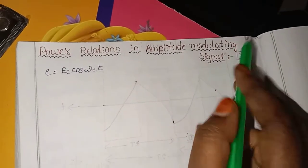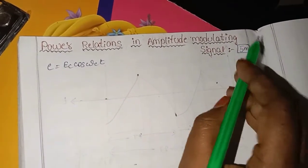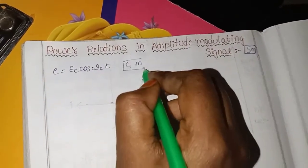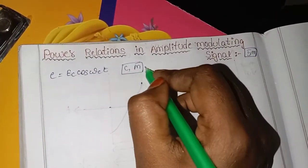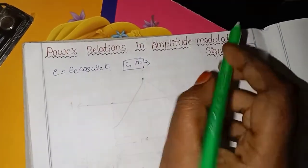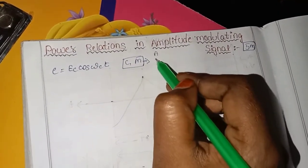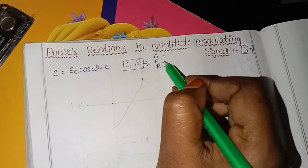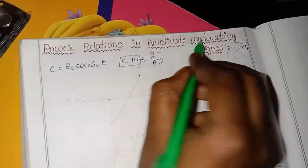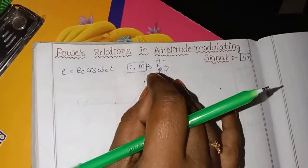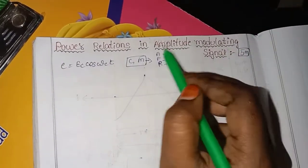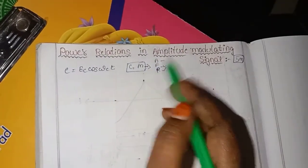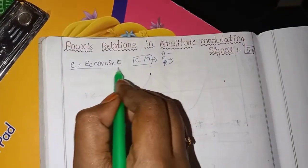In Amplitude Modulation, the first basis is Carrier and Message Signals — these are the two base signals. The key parameters are amplitude, frequency, and phase.